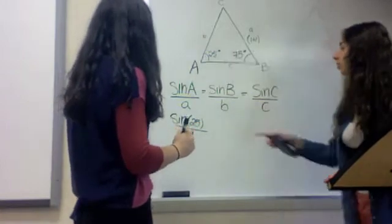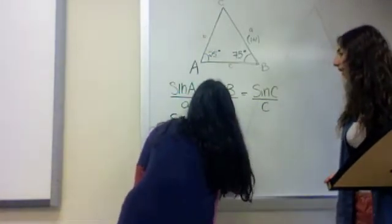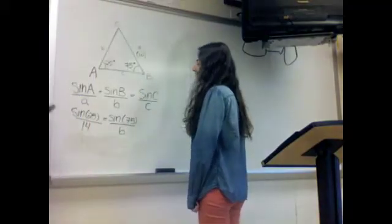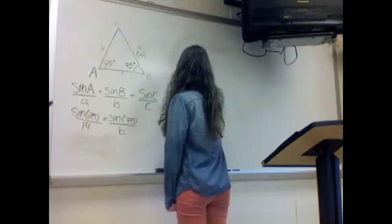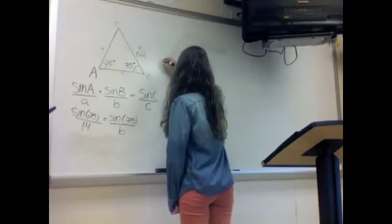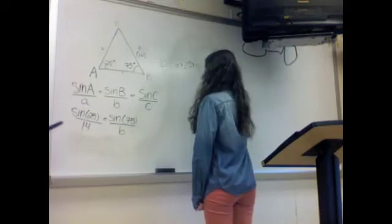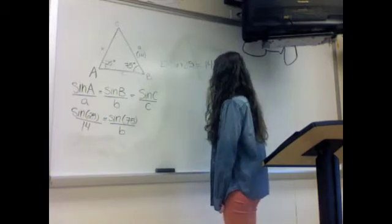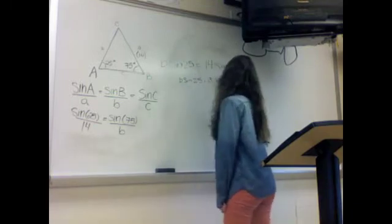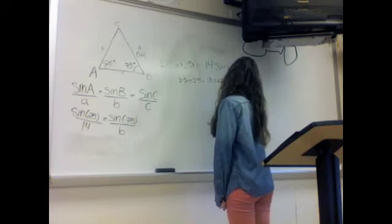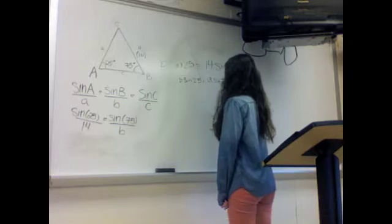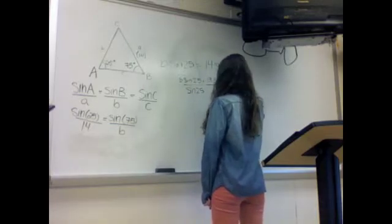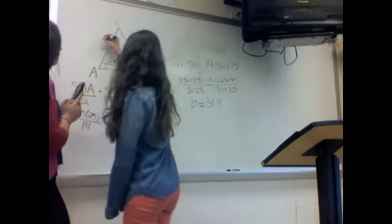Since we're trying to find B, we do sine of B, which is sine of 75, over B. Now you cross multiply, so you have sine of 25 times B equals 14 times the sine of 75. You plug into the calculator and you get 13.52296157. Now you divide both by sine 25, so B equals 31.9, but you can round to 32.